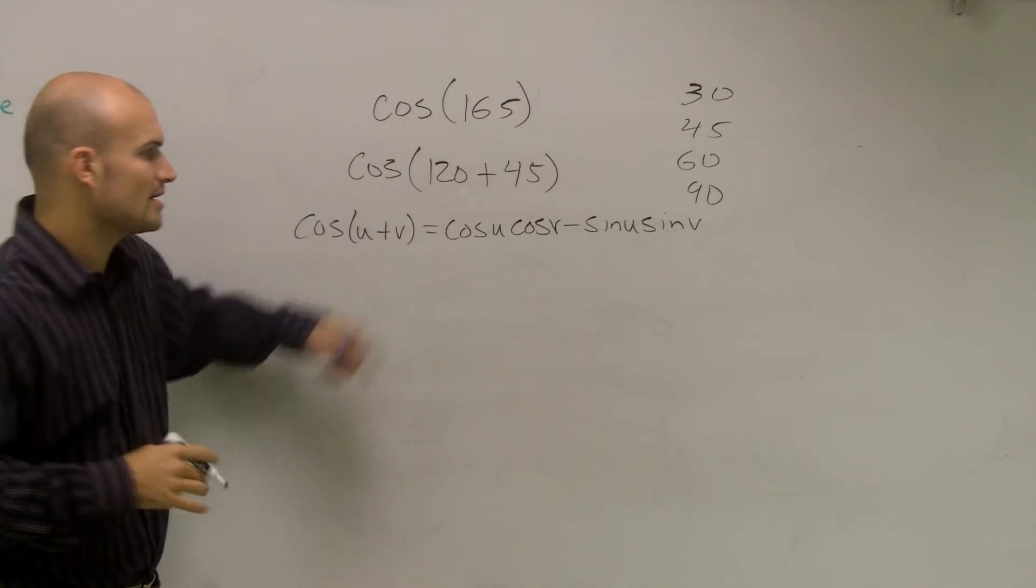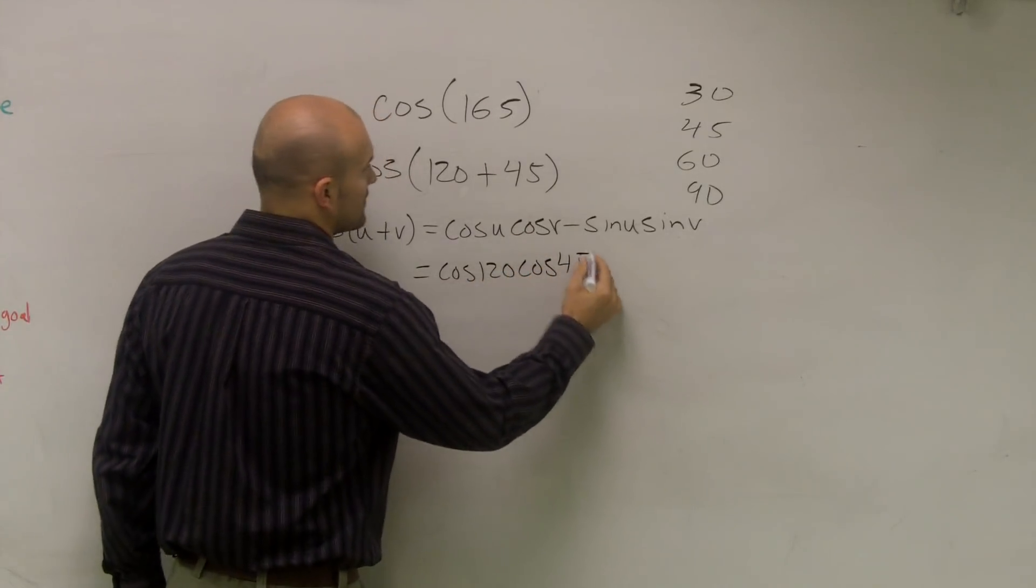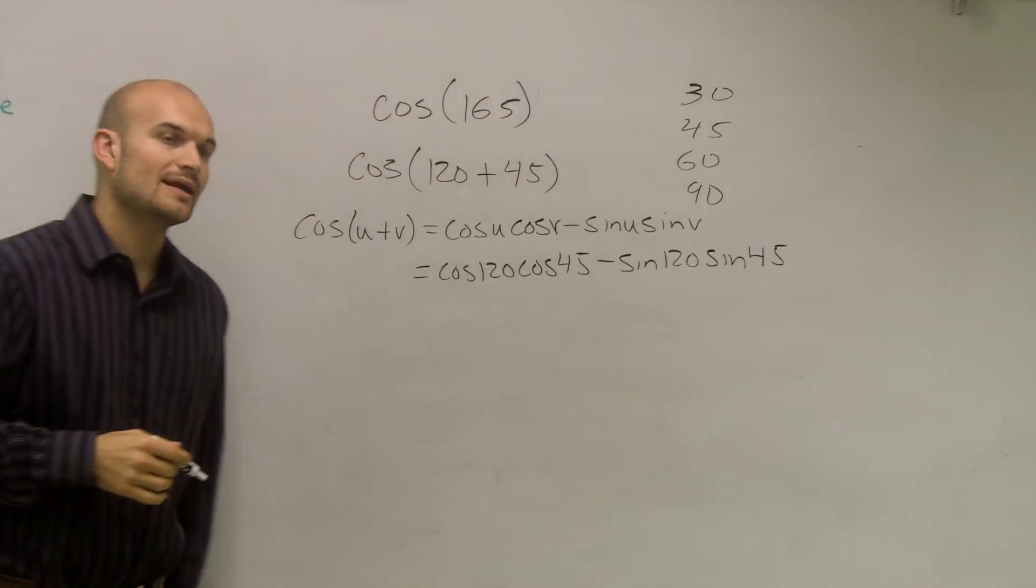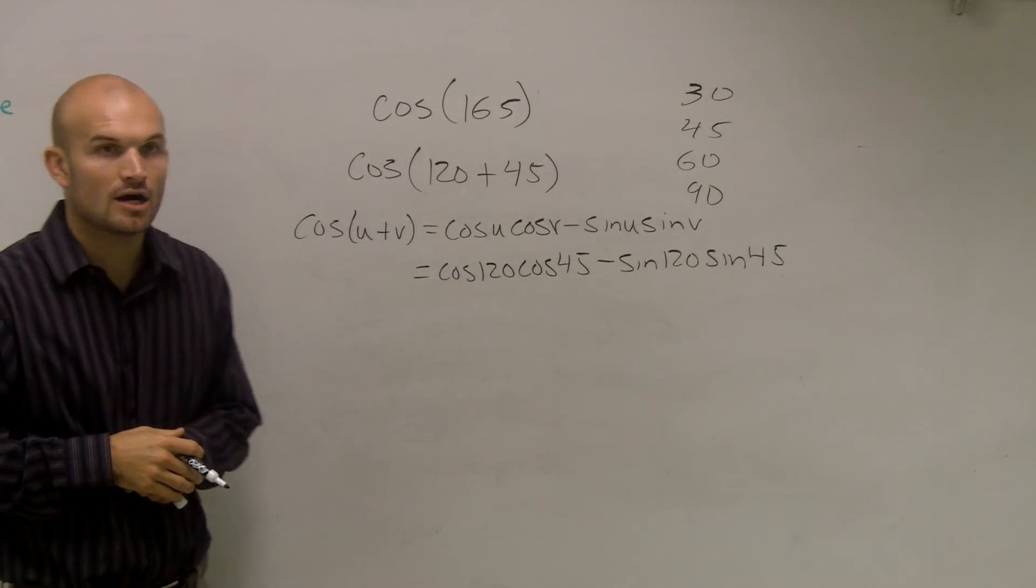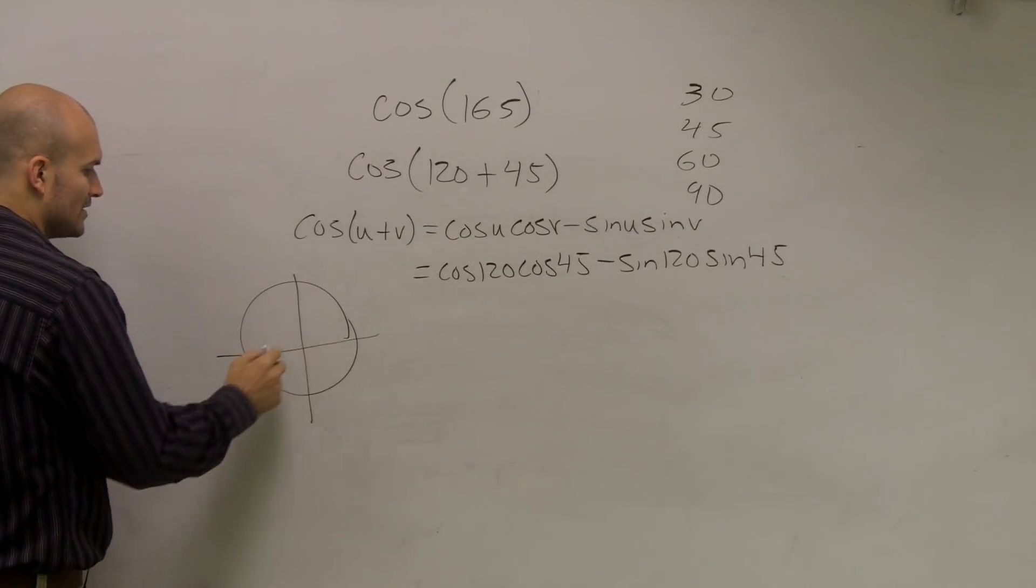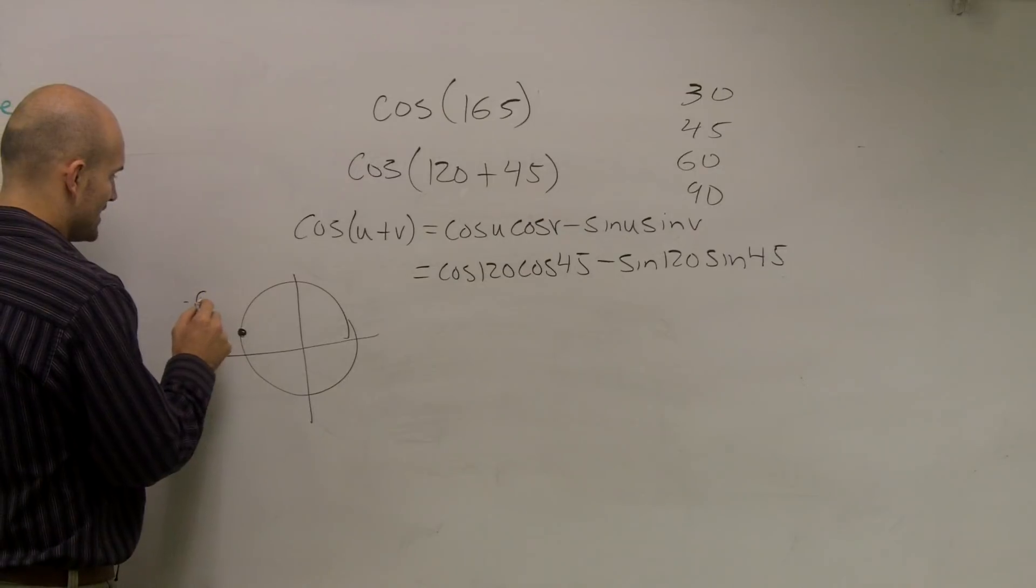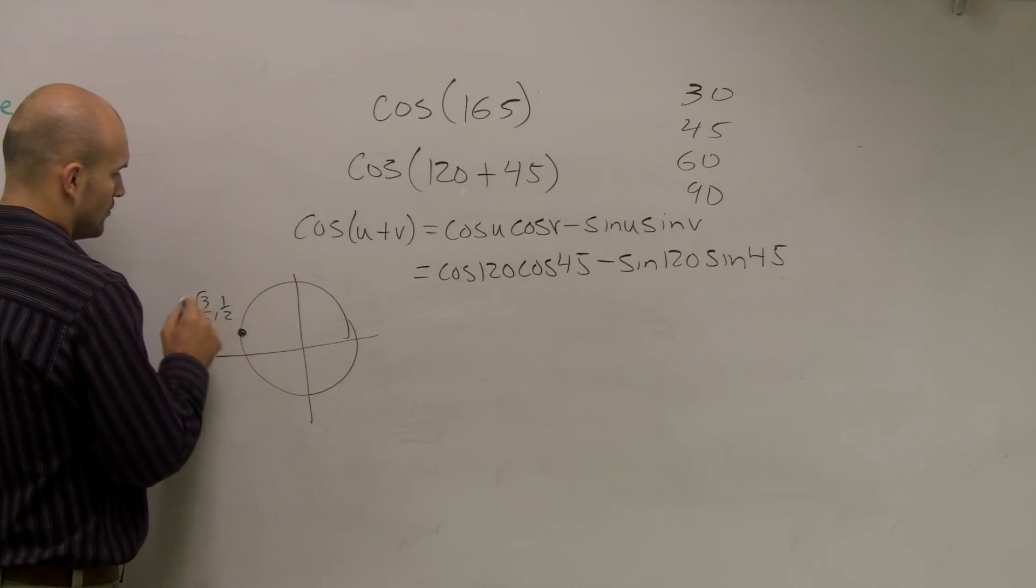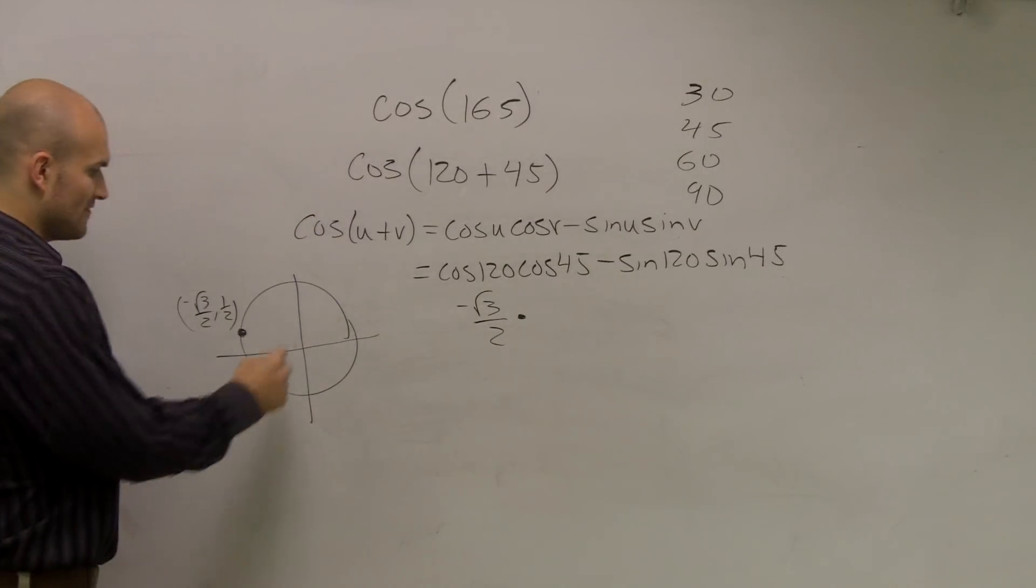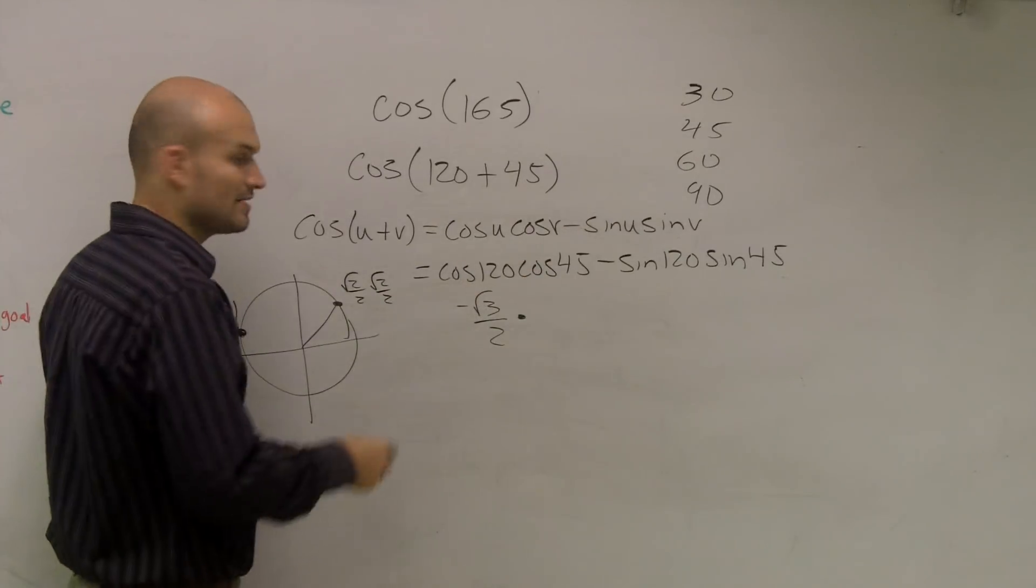So now the next thing I'm going to do is just plug in my values. So therefore, that's cosine of 120 times cosine of 45 minus sine of 120 times sine of 45 degrees. So now I need to determine what is going to be my cosine of 120 degrees. So I take a look at that, and if I look 120 degrees, that's roughly going to be 30 degrees away from 180. So my coordinate point would be negative radical 3 over 2 comma 1 half. So cosine of 120 degrees is negative radical 3 over 2 times the cosine of 45 degrees, which is radical 2 over 2.